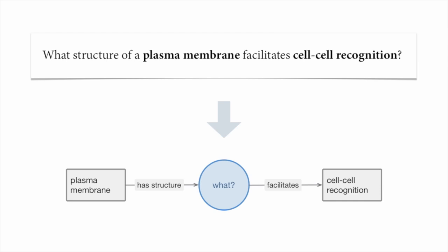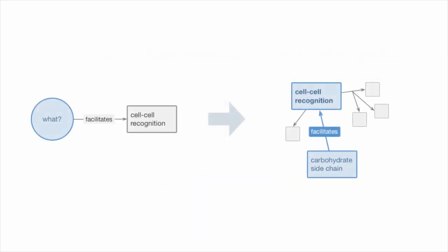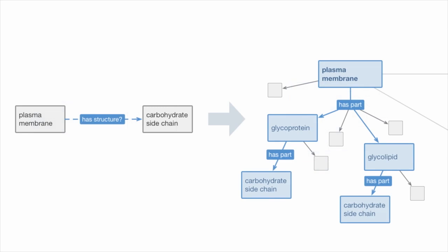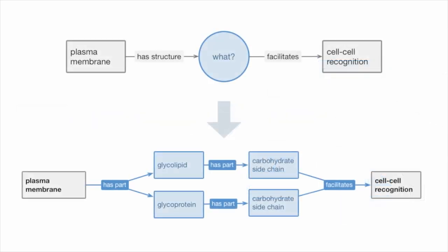The reasoning engine works backward from this query. From the knowledge base, it finds that all cell-cell recognition events are facilitated by a carbohydrate side chain. Then, in a different part of the knowledge base, it finds that all plasma membranes have a carbohydrate side chain. Thus, it deduces that carbohydrate side chain is the answer.